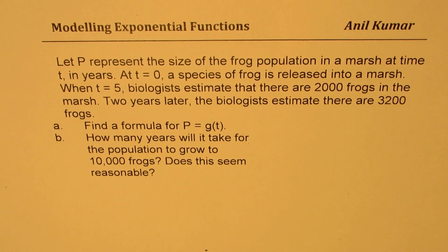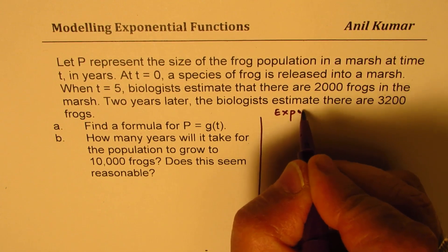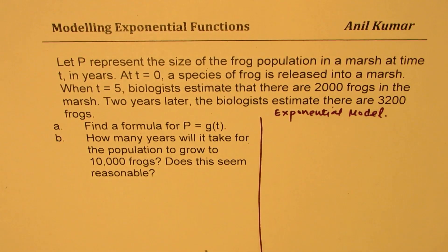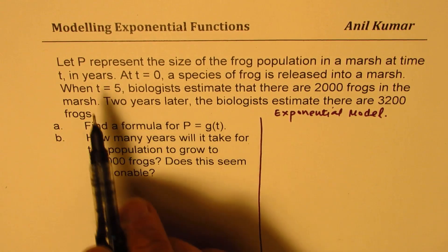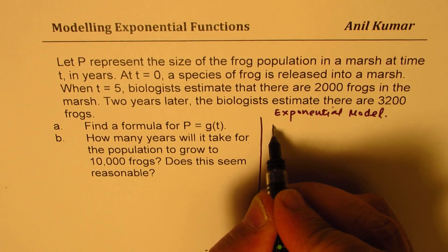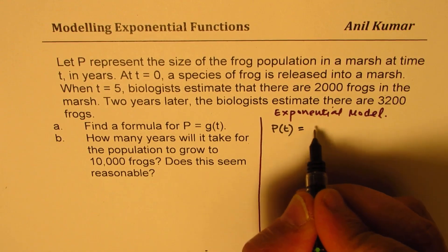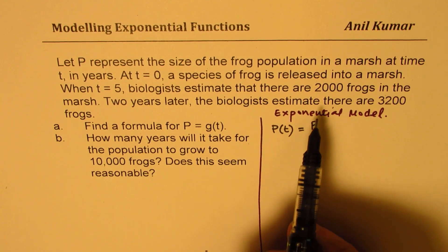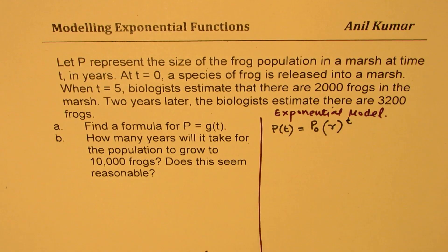Now, let us first get the model. We'll assume exponential model in this case. Normally in such situations, that is the best model to pick. Now, P represents the size of frog population at any time t. So let's call P of t as the population of frog at any time t, where t is in years. And we'll define a variable P0 as the initial number of frogs introduced. And let r be the rate of growth and t the time.